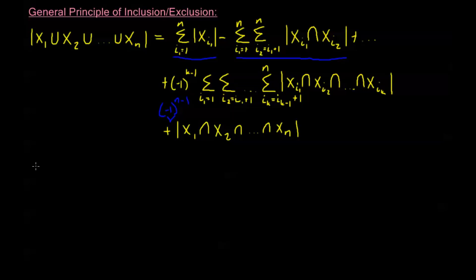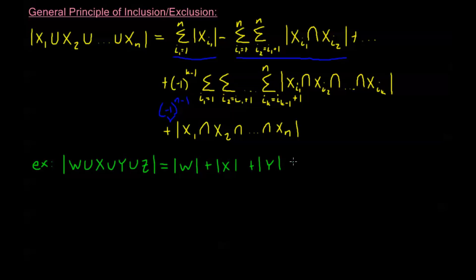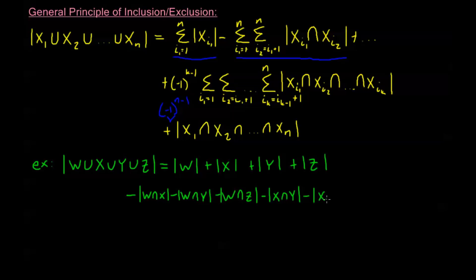As an example, take the union of four sets: W union X union Y union Z. By the inclusion-exclusion principle, we first add the order of W, plus the order of X, plus the order of Y, plus the order of Z. Then we subtract all possible intersections of two sets: minus W∩X, minus W∩Y, minus W∩Z, minus X∩Y, minus X∩Z, and minus Y∩Z.